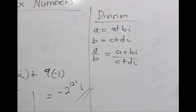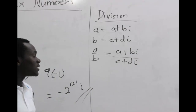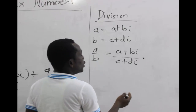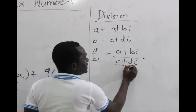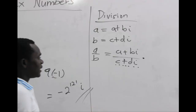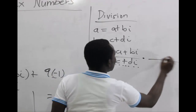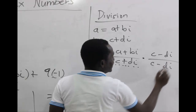It seems there is nothing else we can do at first, but don't forget we talked about complex conjugates in our previous lesson. So we multiply each side by the complex conjugate — it's just like introducing 1, we do not change the equation. We take the complex conjugate of the denominator, which is c + di, and change the positive to a negative, giving us c − di over c − di.